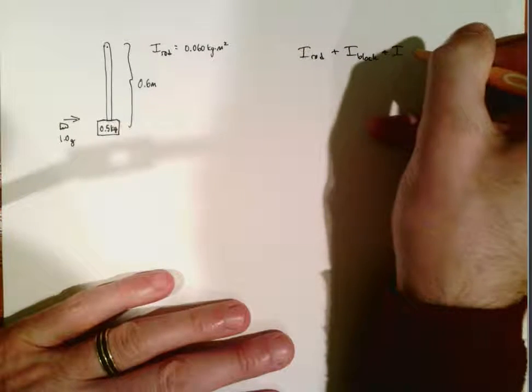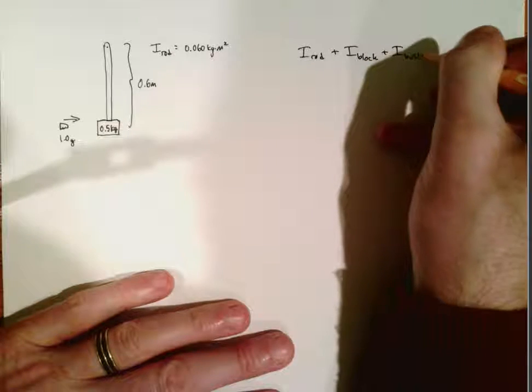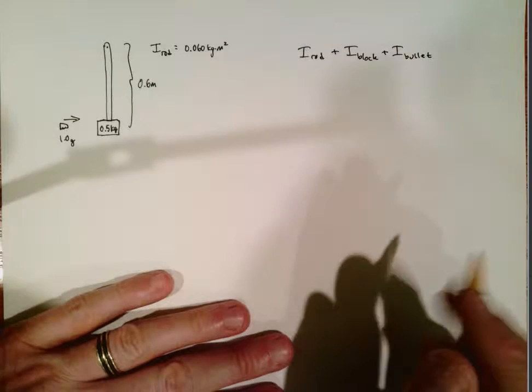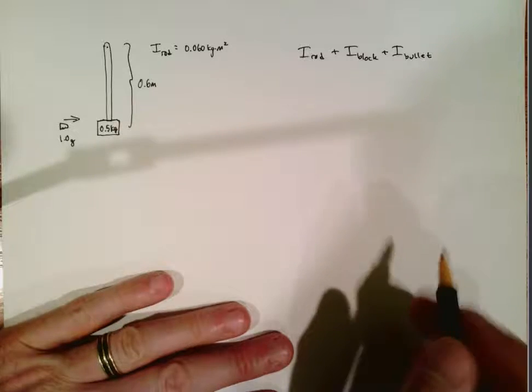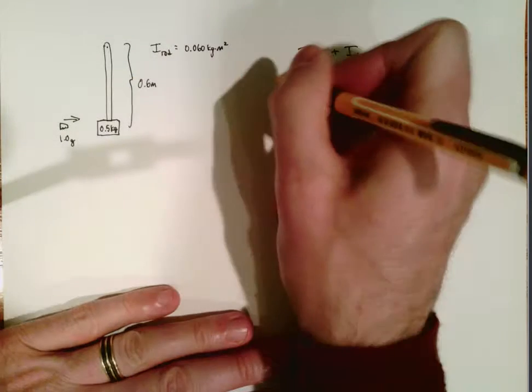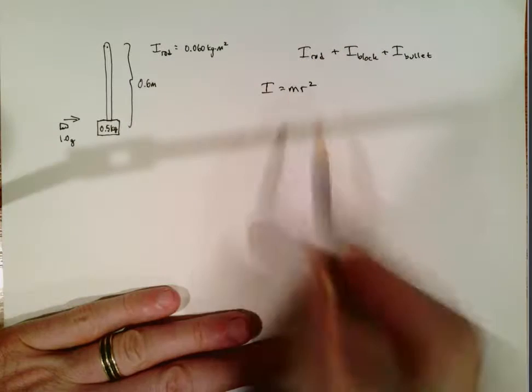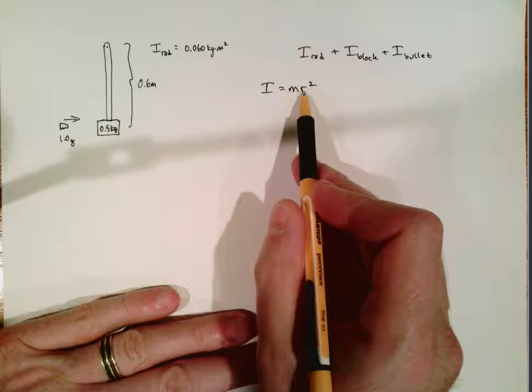So we already have the one for the rod, we just have to figure out the rotational inertia of the bullet and the rotational inertia of the block. Now it does say very specifically to treat the block as a particle, and basically that means the formula for rotational inertia of a particle is mr squared, r here being how far the object is from the axis of rotation.